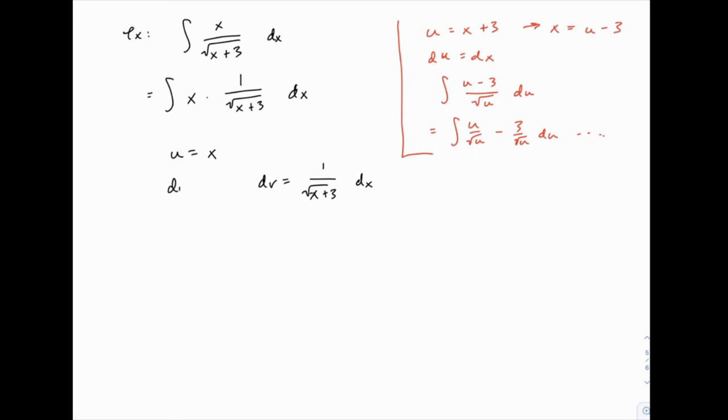So now we're going to find du, which is just dx. Finding v takes a little bit of work. We need to be able to integrate 1 over the square root of x plus 3. To do this, let me rewrite that. Let me replace 1 over the square root of x plus 3 with x plus 3 to the power of negative 1 half.